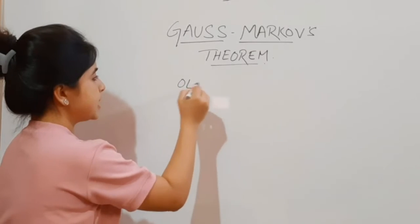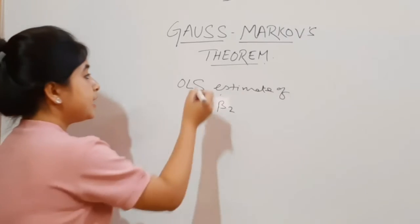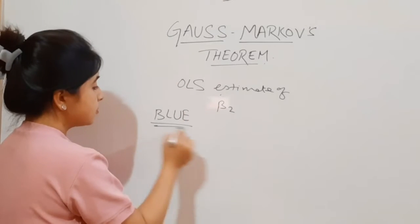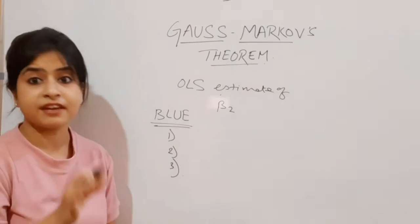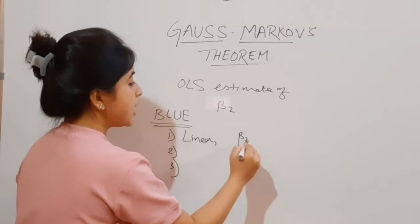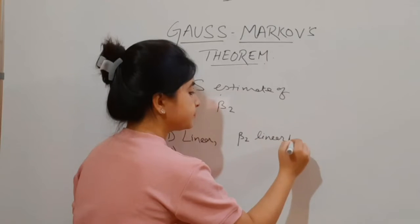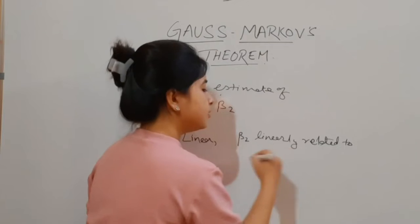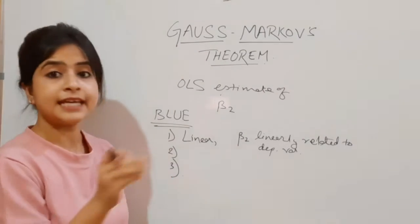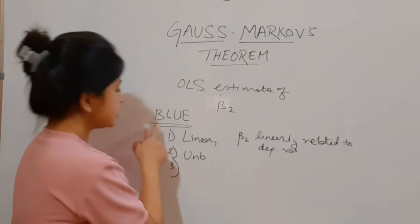Let's go through the BLUE properties of OLS estimates. Taking the OLS estimate of beta 2 — for it to be BLUE, that is Best Linear Unbiased Estimator, it needs to satisfy three properties. Number one: it has to be linear. That means beta 2 has to be in a linear format in the regression model — linearly related to the independent variable, with no powers or other functions. It has to be strictly linear.